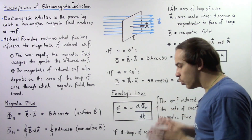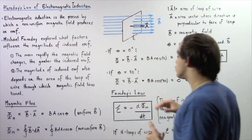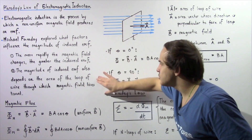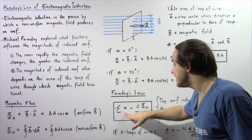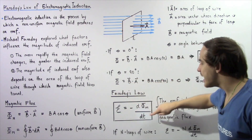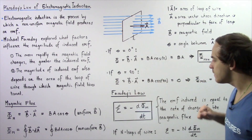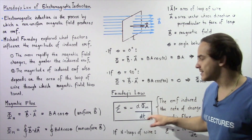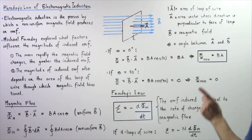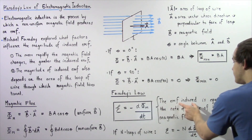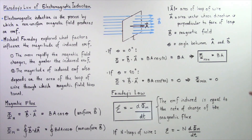Now that we have defined magnetic flux, we are ready to define Faraday's Law of Electromagnetic Induction. From these results, our induced EMF is equal to the negative of the rate of change of our magnetic flux, given by the derivative of magnetic flux with respect to time. This equation, known as Faraday's Law of Electromagnetic Induction, gives us the induced EMF as equal to the rate of change of magnetic flux.